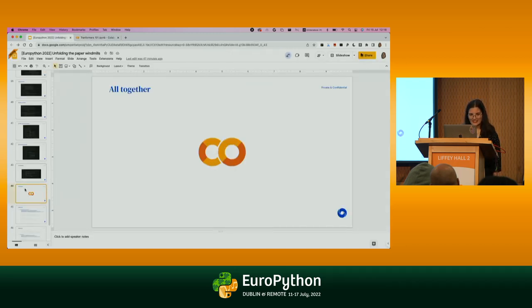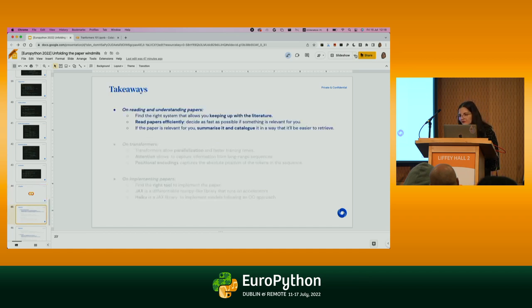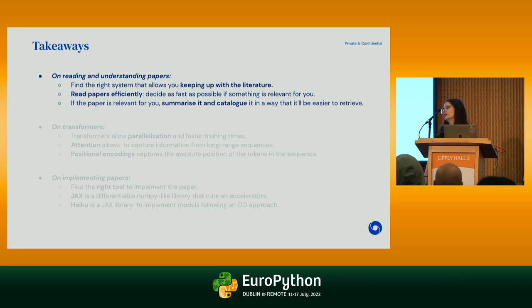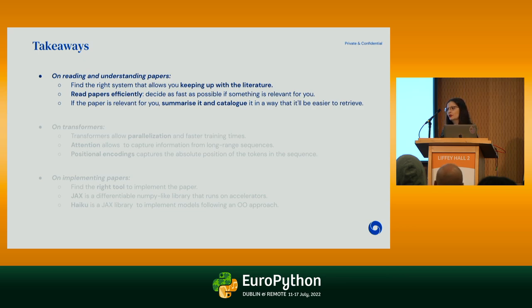The main takeaways: first, find the right system to keep up with the literature — there's no single best tool, find what works for you. Be smart about how you read papers — you don't need to read absolutely everything. And if a paper is relevant, summarize it and store it somewhere safe so you can go back and remember it. Don't keep all the papers only in your brain.